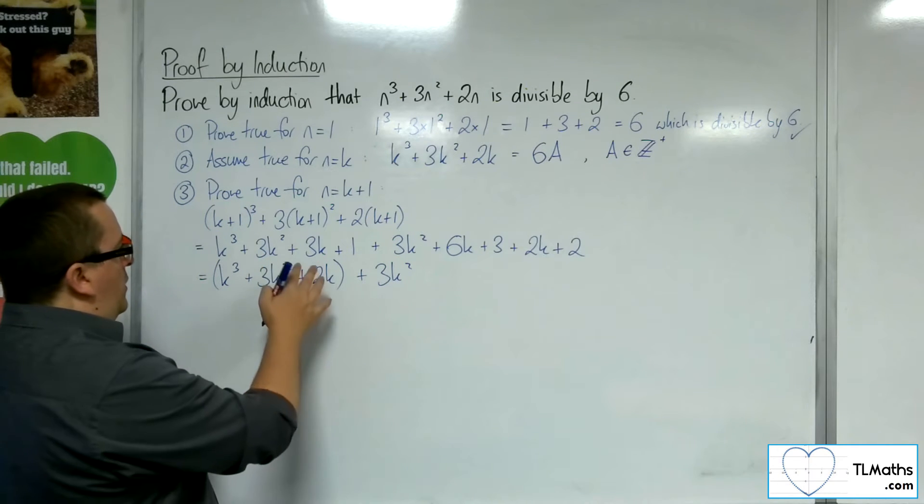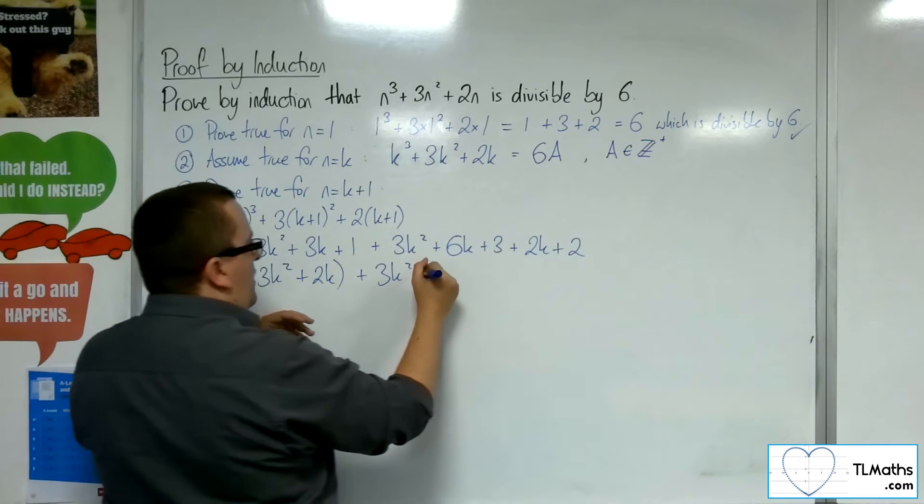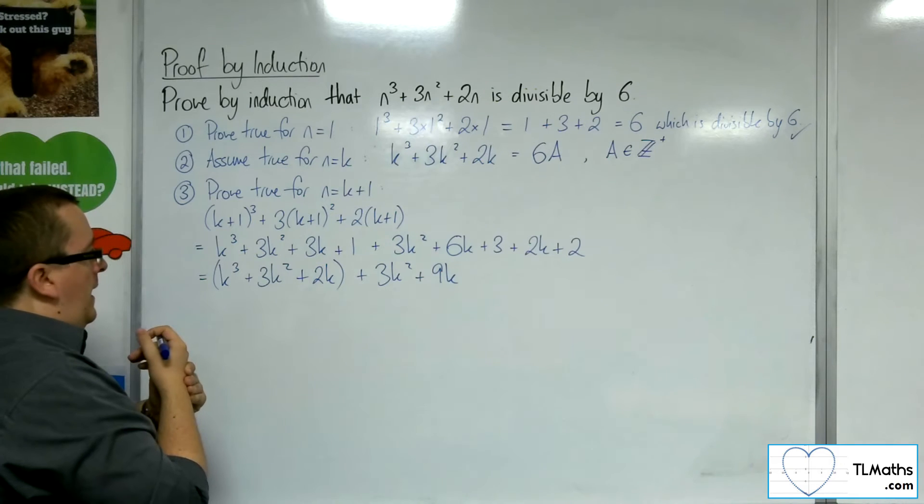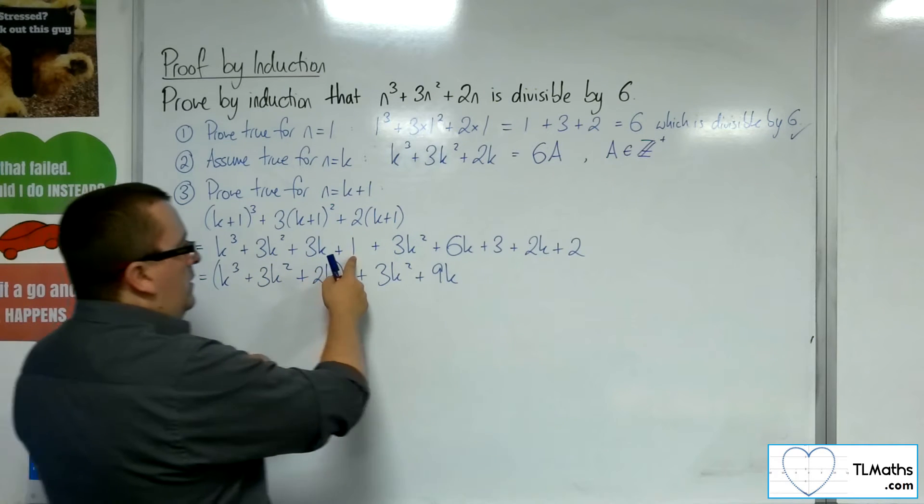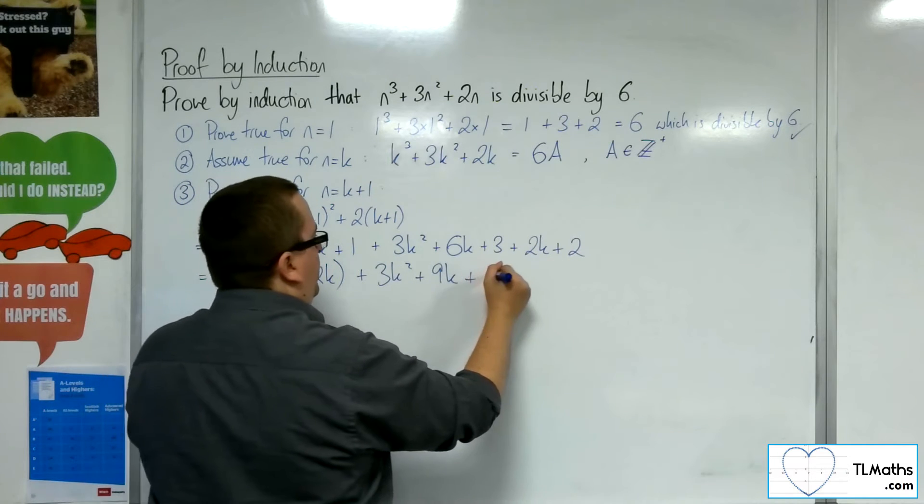And what I've got left is I've got the 3k squared. I've got the 3k there and the 6k. So, that's 9k. And I've got the 1, the 3, so that's 4, and the 2, so that's 6.